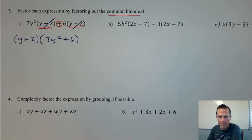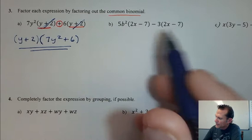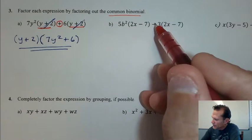Well, what's left over is 7y squared and positive 6. So I'll put those in their own parentheses: 7y squared plus 6. And that's factoring out a common binomial.